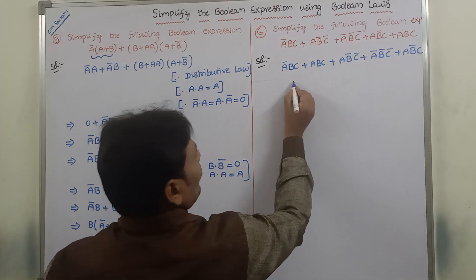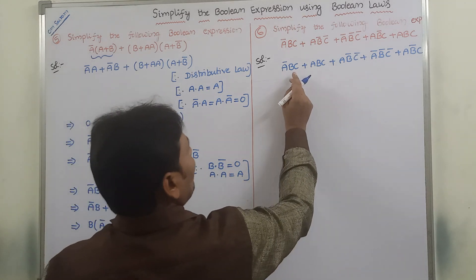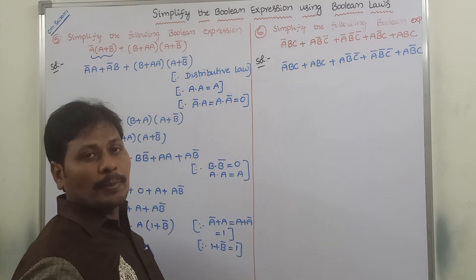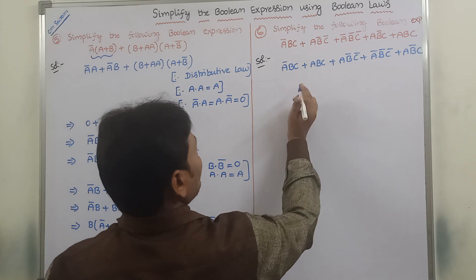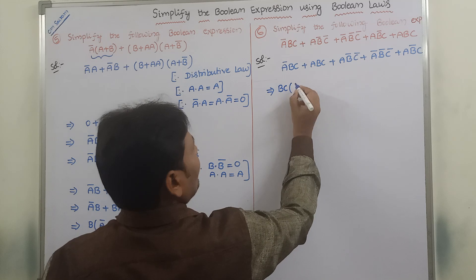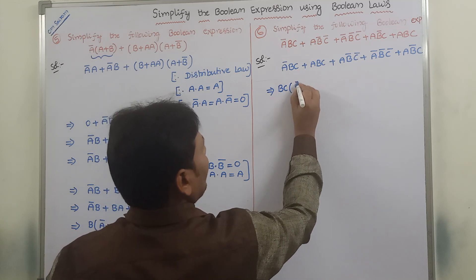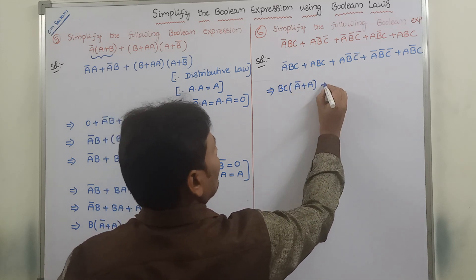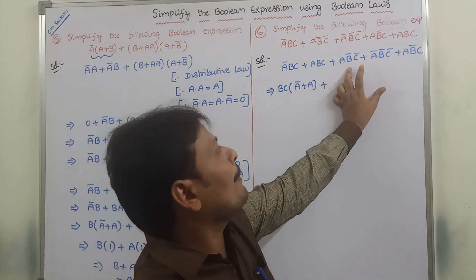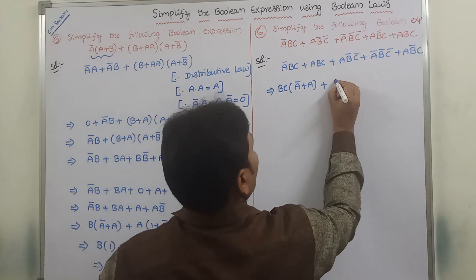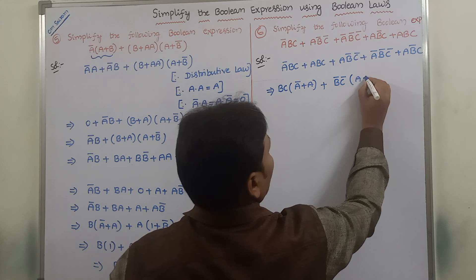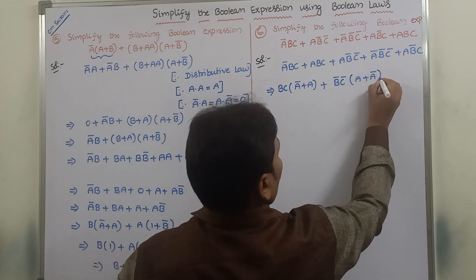From these two terms we are separating B·C, because B·C is present in both the first and second terms. After separating B·C from the first two terms we are getting B·C·(A-bar plus A). From the next two terms we are separating B-bar·C-bar, so B-bar·C-bar·(A plus A-bar).